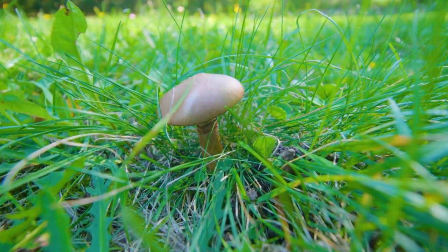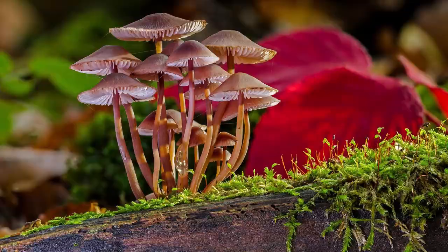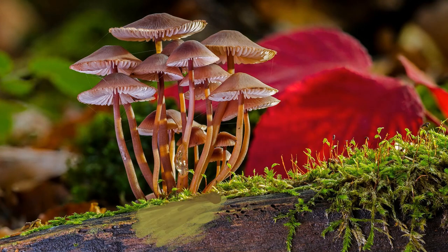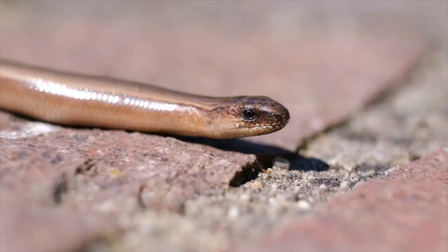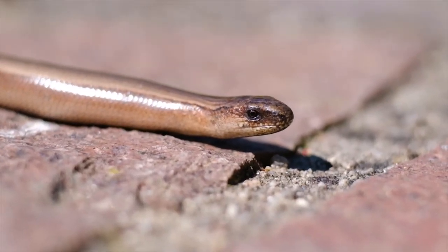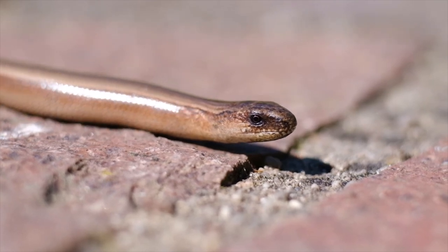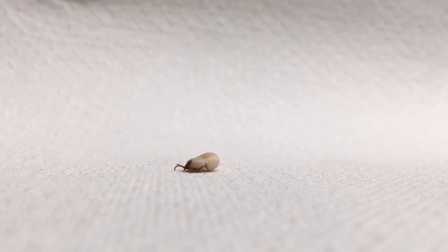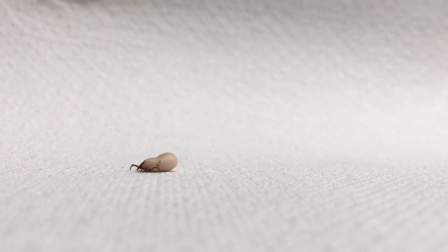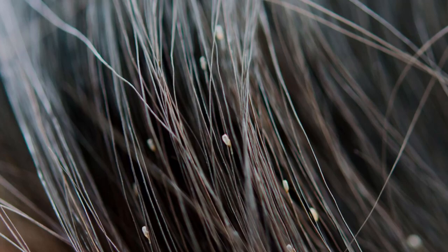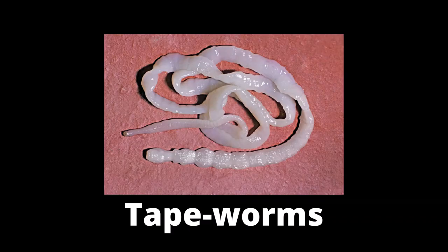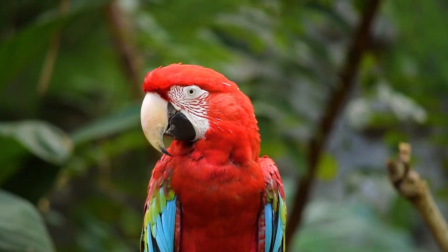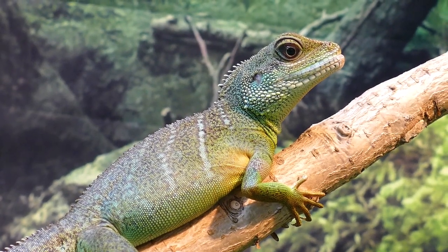Some organisms digest food outside their body — they release enzymes, break down the food, and then absorb it. Examples are bread molds, yeast, and mushrooms. Some organisms eat the whole material and then break it down inside their body, like snakes. Others live on or inside a host and take nutrients from them — like lice, leeches, ticks, and tapeworms, which are parasites. As there are different organisms, we get to see different digestive systems.